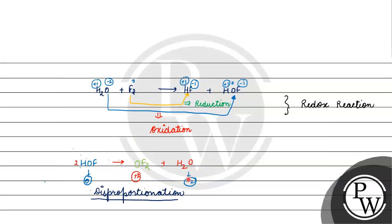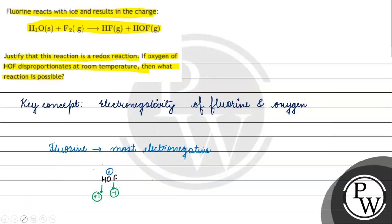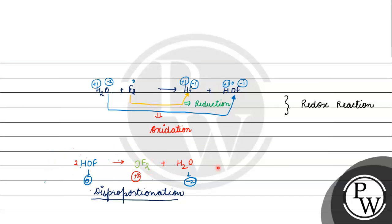Coming back to the question: this justifies it as a redox reaction. And if oxygen of HOF disproportionates at room temperature, this will be the reaction — a disproportionation redox reaction. I hope you understood it well. Thank you and all the best.